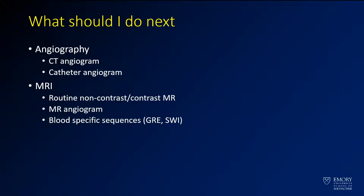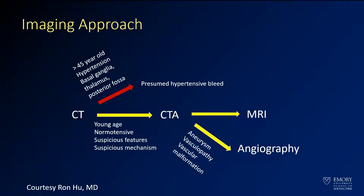If you find a hemorrhage, you need to think about what to do next. Angiography — whether CT angiography, MR angiography, or catheter angiogram — is frequently going to be part of the workup. MRI is also a key component; you want routine non-contrast sequences but also contrast to look for tumors and metastatic disease, along with blood-specific sequences like susceptibility-weighted imaging. For a patient over 45 with classic hypertensive features, you can presume hypertension and end the workup there.